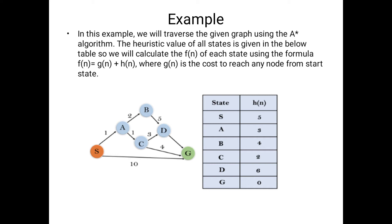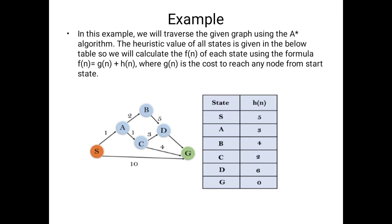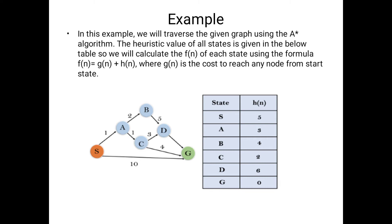Each path cost is shown on the edges. For example, S to A has path cost 1 and S to G has path cost 10. The table shows heuristic values for each node. Note that the heuristic value of the goal node G is zero — this is mandatory for both best first search and A* search algorithms.